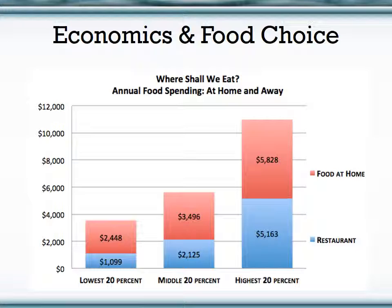Take a minute to review this graph. What this shows is how different income levels in the United States spend their money when it comes to food. At the very left you have the lowest 20th percentile of income; the middle is the middle 20th percentile income; and the right graph highlights the highest 20 percent income in the United States. The different colors are associated with either restaurant spending, which is blue, or red, which is grocery store or foods eaten at home.